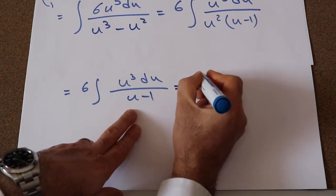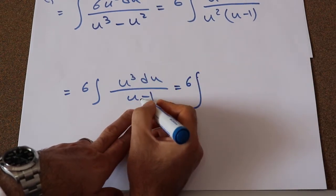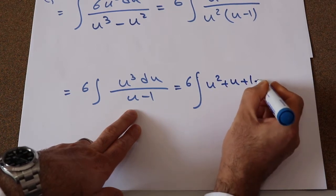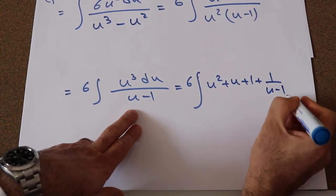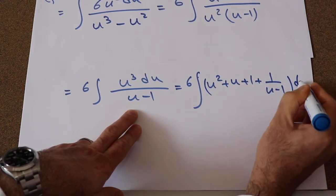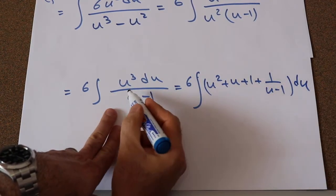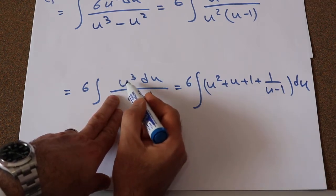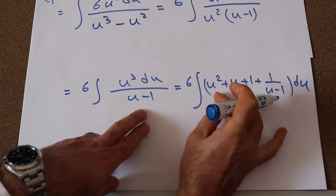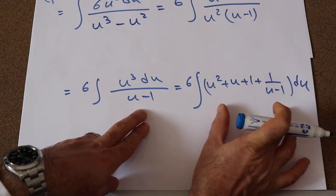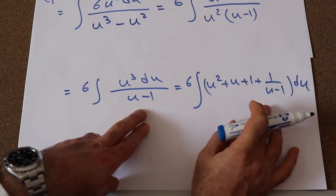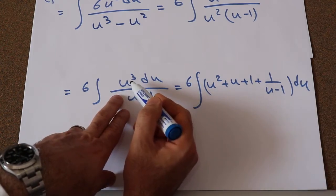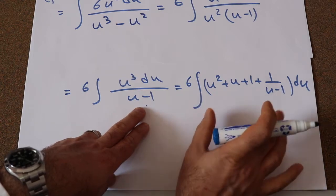If you do that, this becomes 6 times the integral of u³ divided by (u minus 1), which equals u² plus u plus 1 plus 1/(u minus 1), all times du. If it's not clear how to get from u³/(u minus 1) to this form, write in the comment section and I'll explain. This is basically simple algebra — all you need to do is divide u³ by (u minus 1).